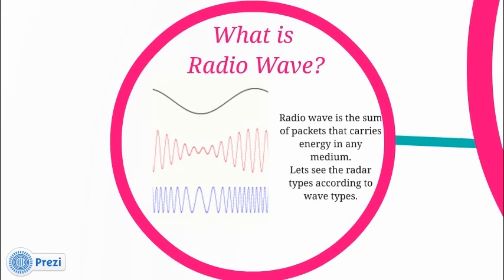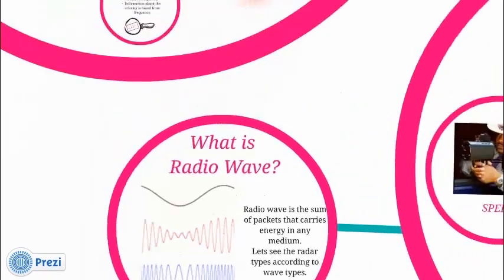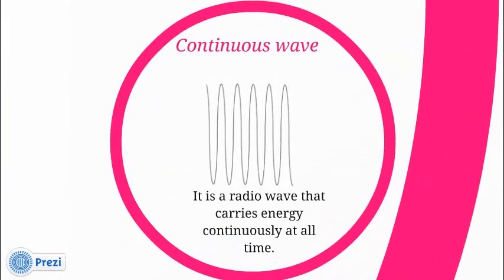What is a continuous wave radar? Well, initially continuous wave is a radio wave that carries energy continuously at all times. The continuous wave radar is a radar using this type of signal, and it cannot measure the range.